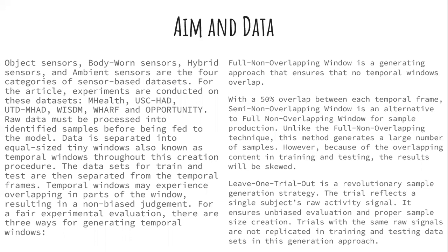Three methods have been used for temporal window generation: full non-overlapping window, semi non-overlapping window, and leave-one-trial-out. The full non-overlapping window is a general approach ensuring no temporal windows overlap. The semi non-overlapping window generates a larger number of samples but produces skewed results due to overlapping content in training and testing. The leave-one-trial-out method reflects a single subject's raw activity signal, ensuring unbiased evaluation and proper sample size creation.